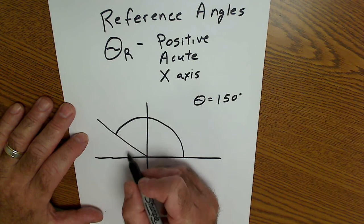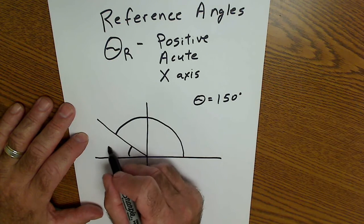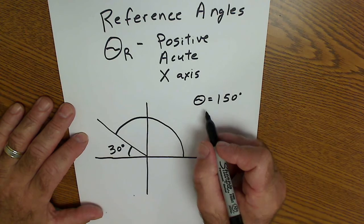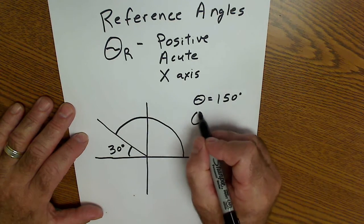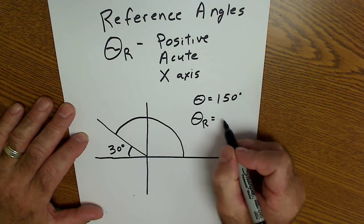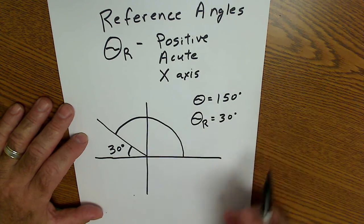My reference angle is this angle here, a positive, acute angle to the x-axis. So if theta equals 150, theta sub r is equal to 30. The two angles are supplementary.